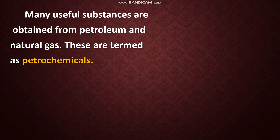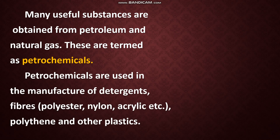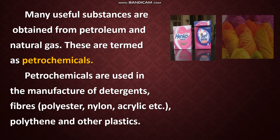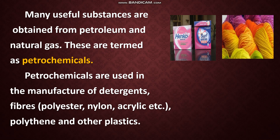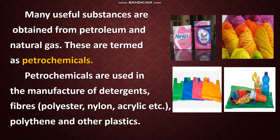Many useful substances are obtained from petroleum and natural gas — these are called petrochemicals. Petrochemicals are used in the manufacture of detergents and fibers. In your previous lesson on synthetic fibers and plastics, you learned about fibers like polyester, nylon, and acrylic, and plastics like polythene. These fibers and plastics are obtained from the raw material called petrochemicals.